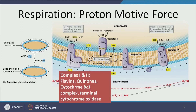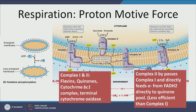Complex I and Complex II have proteins such as flavins, quinones, cytochrome, BC1 complex, and terminal cytochrome oxidases. This BC1 complex is very important — this is where most of the chemical reactions take place. In Complex II, it bypasses the Complex I step and directly throws electrons into the quinone pool, which is part of the Q cycle reaction. The electrons are directly sent here, and then four protons are generated along with negative charge.